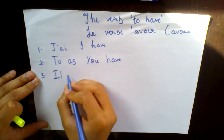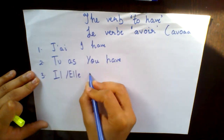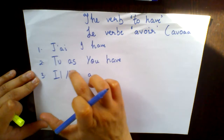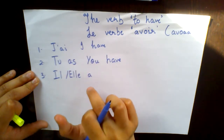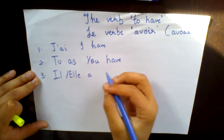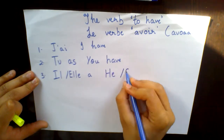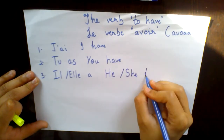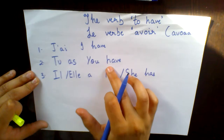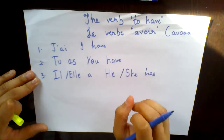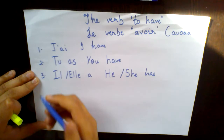The third word is il/elle a — I-L or E-L-L-E followed by A. This is also pronounced as 'a', and it means 'he' or 'she has'. We do not say 'have' — this is the basic English grammar rule: it is 'he has' or 'she has'.